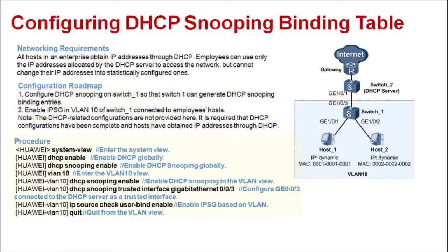Let's see the operations procedure. Enter the system view and enable DHCP and DHCP snooping globally. Enter the VLAN 10 view, enable DHCP snooping in the VLAN, configure GE0/0/3 connected to the DHCP server as a trusted interface, enable IPSG in the VLAN, and quit.